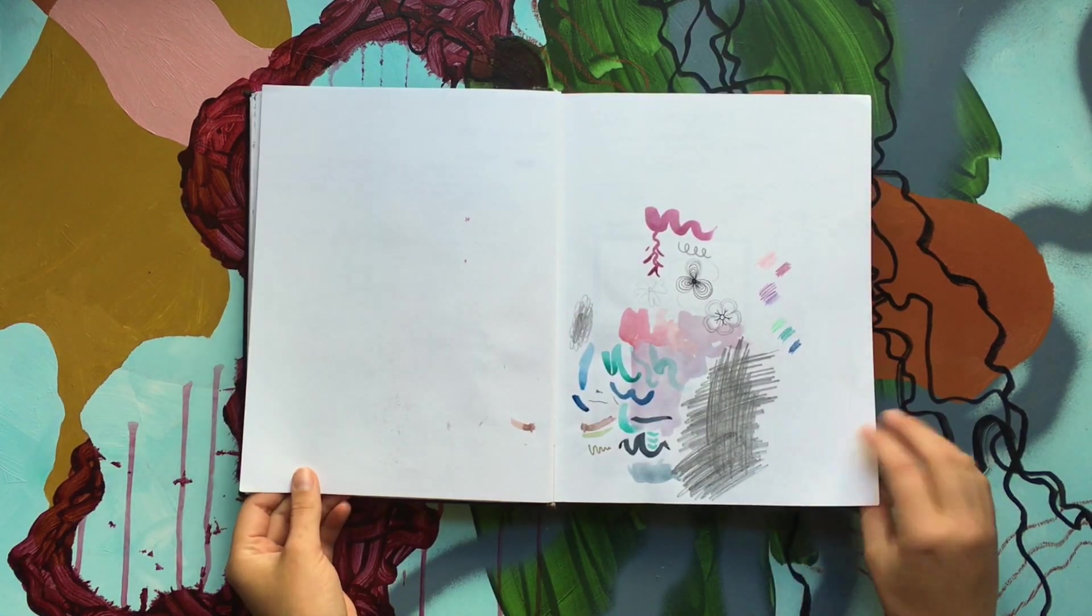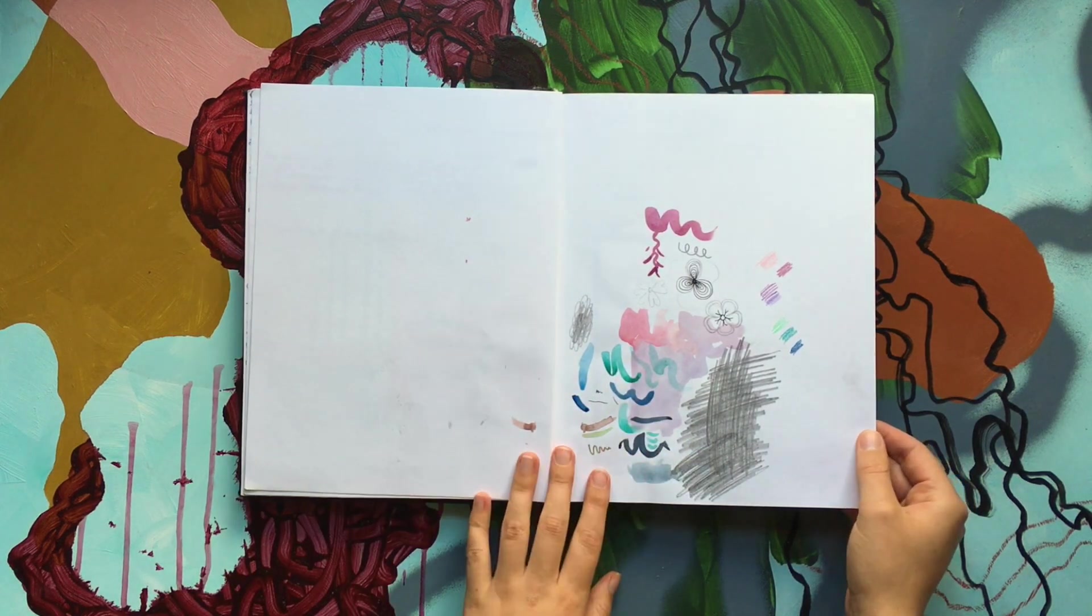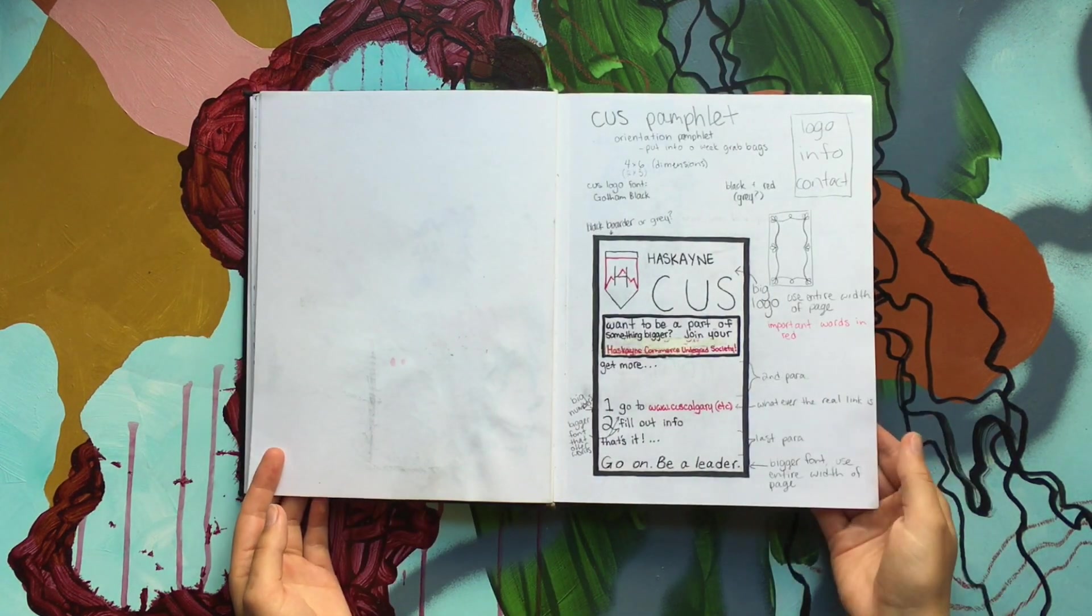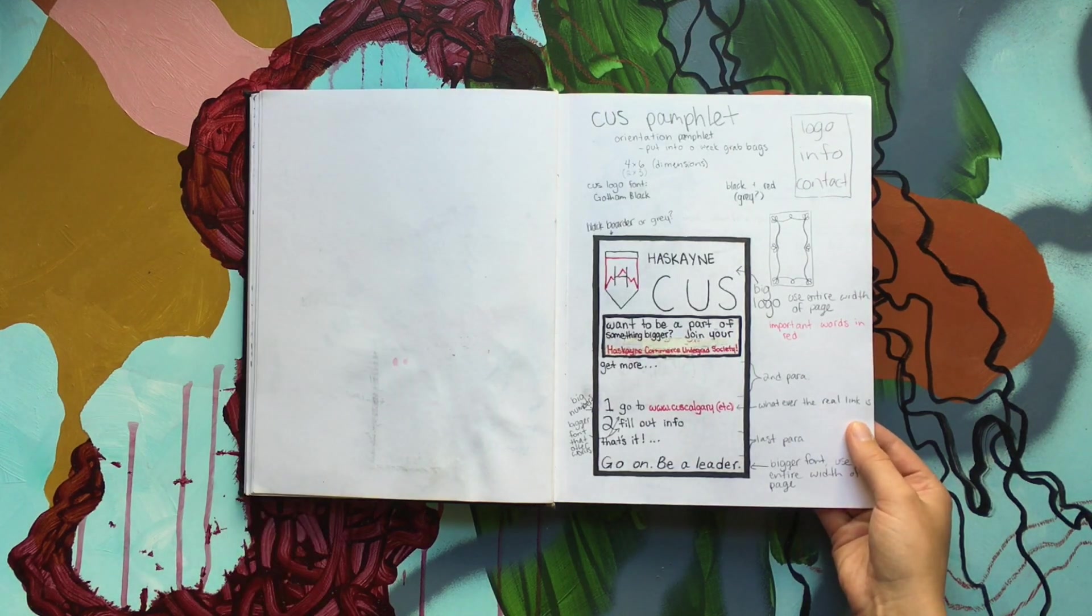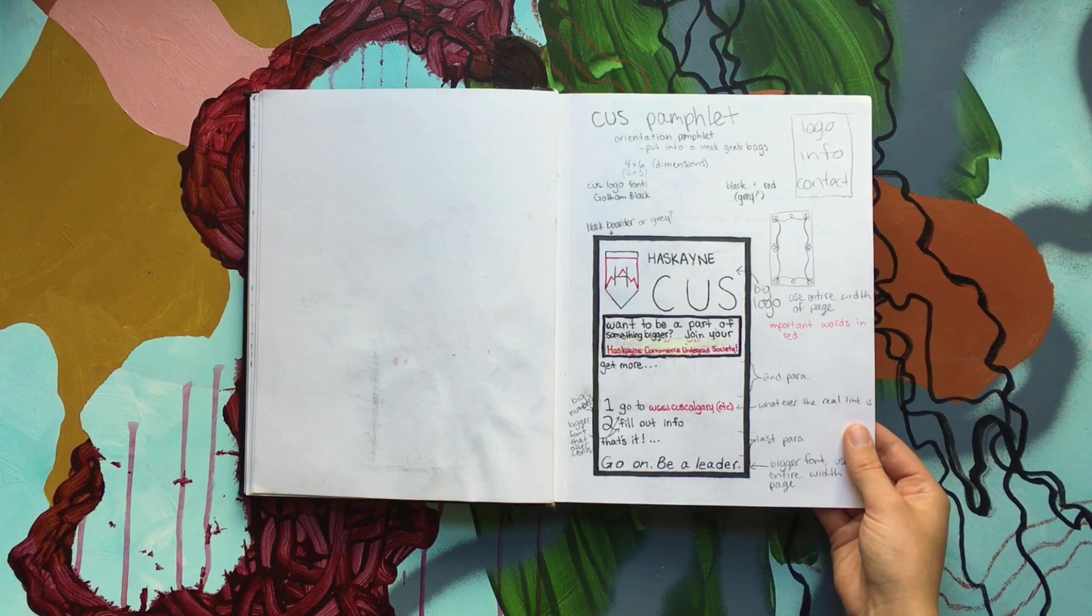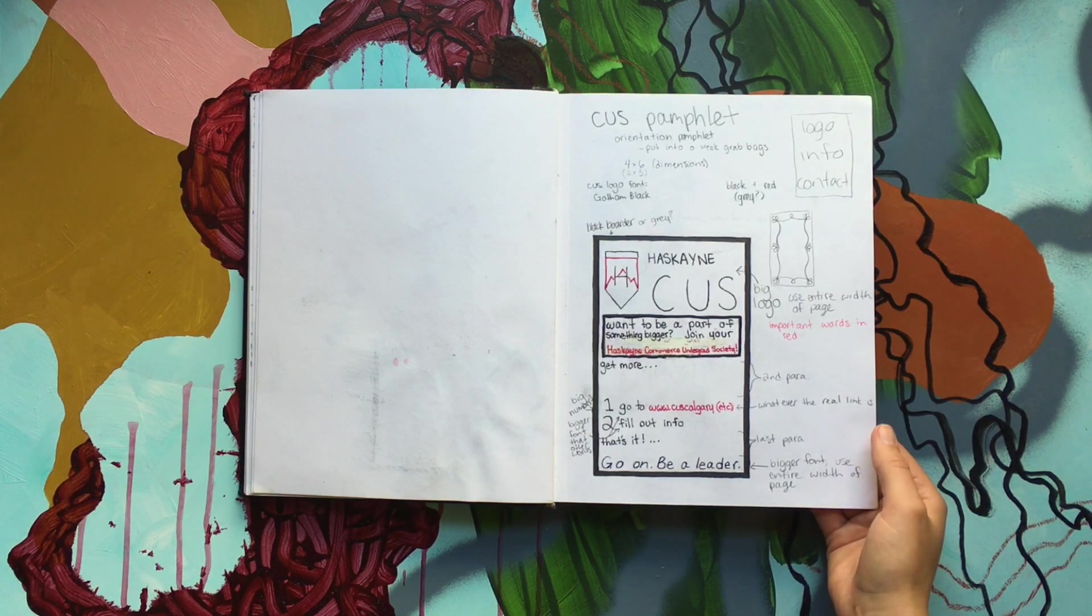That's kind of cute. Just a little tester page. So this is when I worked at the Commerce Undergraduate Society, CUS for Haskane, just trying to draw out some print materials for them or some ideas.